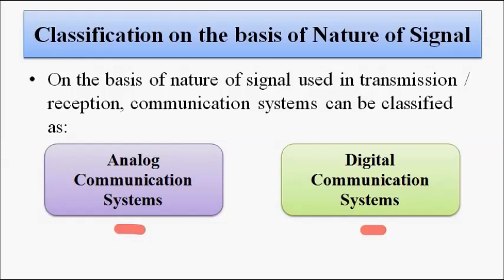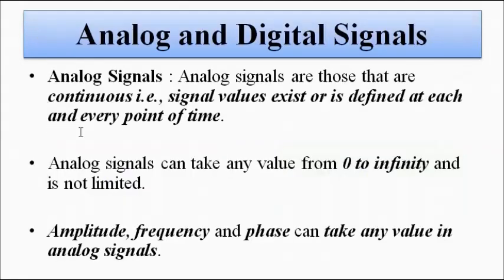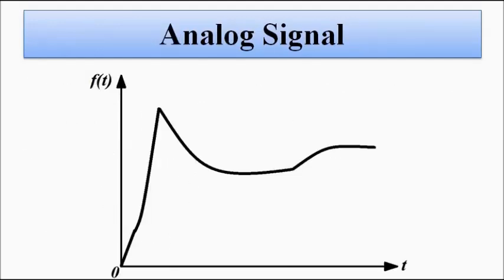We all know the difference between analog and digital — let us recollect. Analog signals are continuous, which means the value of the signal at each and every point of time is defined. It can take any value from zero to infinity; the amplitude values are not limited. Amplitude, frequency, and phase can all take any value in analog signals.